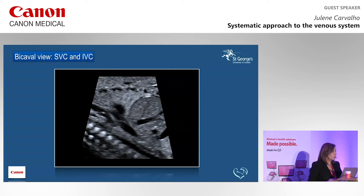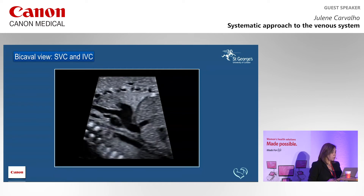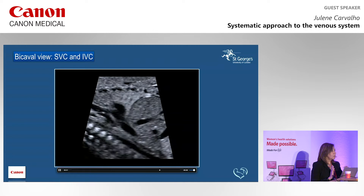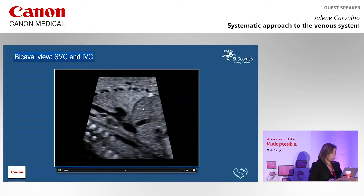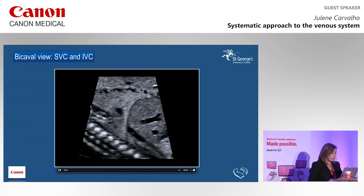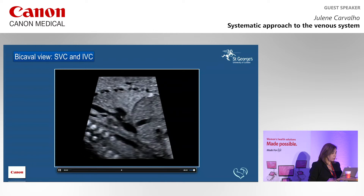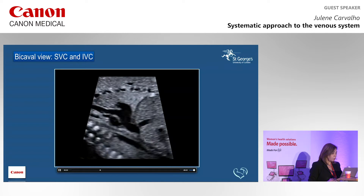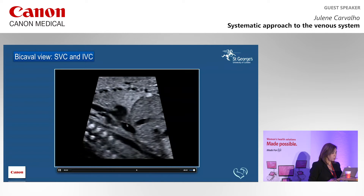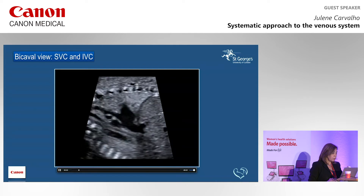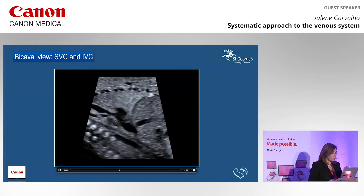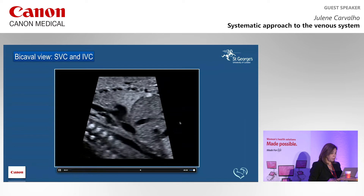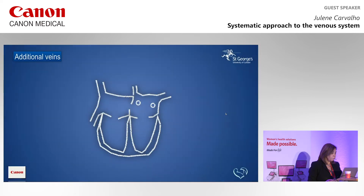A typical view for looking at systemic venous drainage is the sagittal view, where you can do a sweep on a sagittal plane between your SVC, aorta, and pulmonary artery. You can see the superior vena cava draining into the right atrium, the right atrial appendage, and the inferior vena cava coming from below across the diaphragm and joining the right atrium - this is called the bicaval view. You can also see some umbilical venous return joining, showing the longitudinal view of the inferior vena cava.